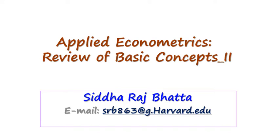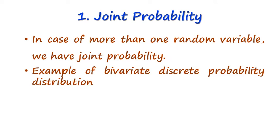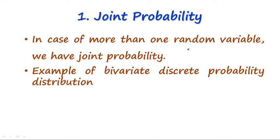Welcome to this new video on applied econometrics. In this video I'll talk about some more concepts useful for understanding the methodology of econometrics. Our first concept is the joint probability distribution, which arises when there are more than one random variables. In the case of more than one random variable, we have joint probabilities and the distribution is called a joint probability distribution.